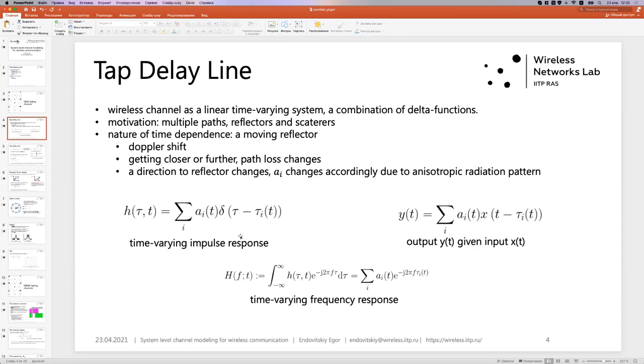And what is the nature of time dependence in such model? For instance, a moving reflector. If a reflector is moving, it reflects a signal that is shifted according to Doppler shift. It may get closer or further, so path loss changes that coefficient. And a direction to the reflector itself changes, so it changes accordingly due to anisotropic radiation pattern. So we have a time-variant impulse response. And that yields a given input.